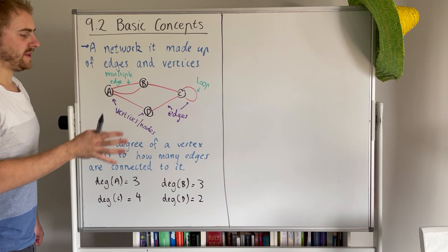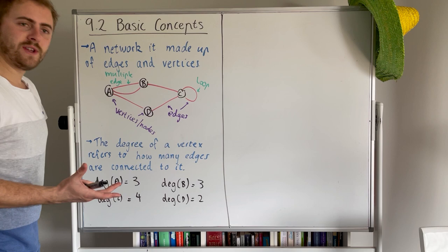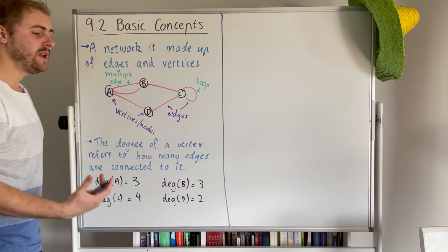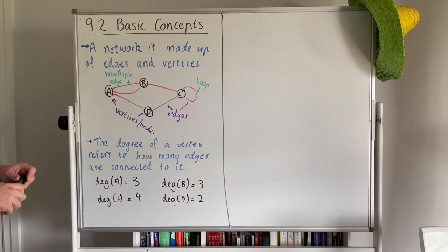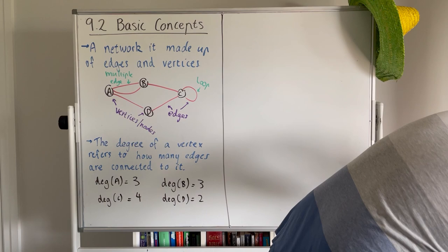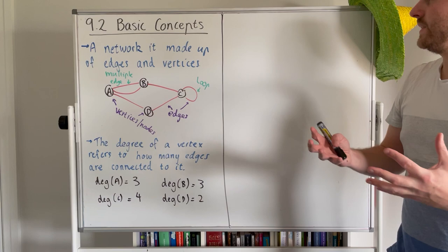Often there'll be some other concepts that look at this as well, talking about odd and even degrees. That just refers to whether the degree of the number is odd or even. So in this case A and B are both odd vertices or odd degree vertices because they're three. D and C are even simply because the number is even, four and two. So if you ever get a question about odd and even degrees, that's what that refers to.